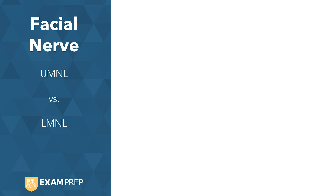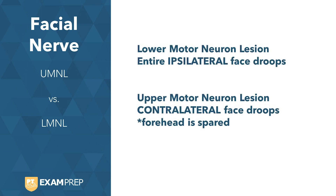There's a fairly simple way to memorize this, and I'm sure most of you have done that. The simple rule is that in a lower motor neuron lesion the entire ipsilateral face droops, versus in an upper motor neuron lesion the contralateral face droops and the forehead is spared.